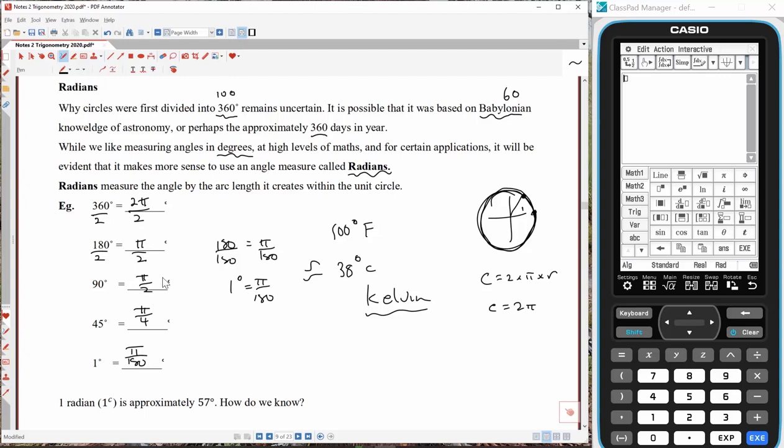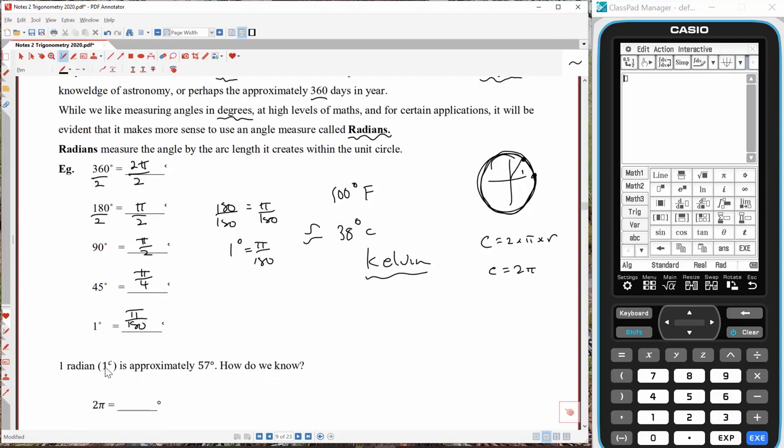Now 1 radian, which is written like this, this C thing means radians, don't ask me why it's C as well, I don't know why that is, is approximately 57 degrees. How do we know?